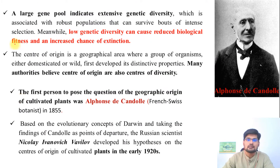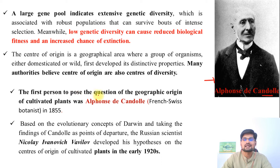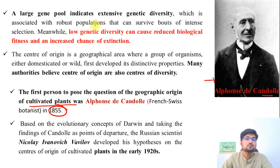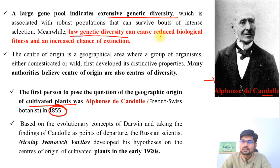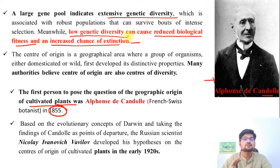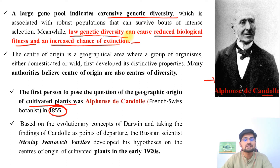Alfonso de Candol was one of the first persons to actually identify the geographic origin of cultivated plants, back in 1855. A large gene pool indicates extensive genetic diversity, whereas low genetic diversity can be the cause of reduced biological fitness and increased chance of extinction. If a species is low on gene pool, it has a higher chance of extinction in the future. Bigger gene pool means a better chance of survival.